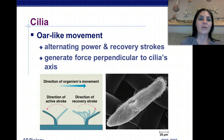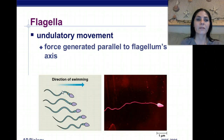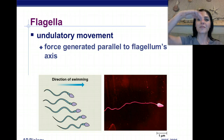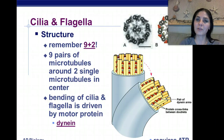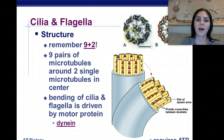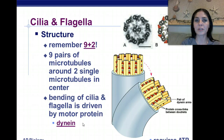Cilia generate a force that is perpendicular to the cilia's axis — here's the direction of the organism's movement and this is the perpendicular stroke. The flagella have an undulatory movement, meaning wave-like motion, and the force generated is parallel to the flagellum's axis. Whenever we're talking about cilia and flagella, you need to remember the rule of 9 plus 2: we have 9 pairs of microtubules that surround 2 individual microtubules in the middle. They are responsible for the bending of the cilia and the flagella, and they are driven by a motor protein called dynein.